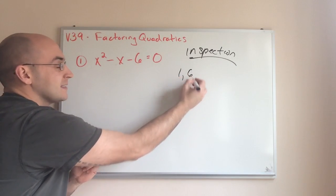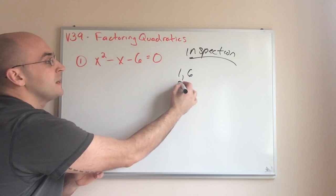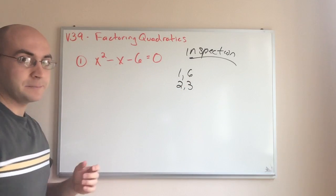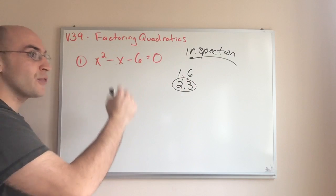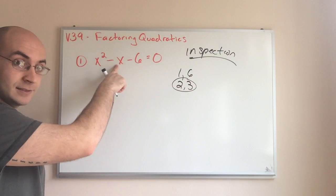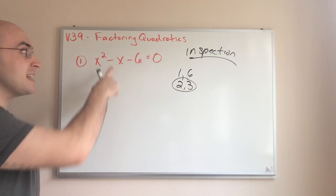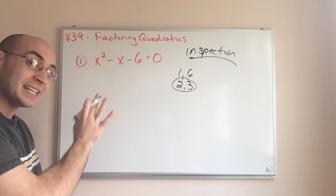Okay. So, I know one and six are factors. One times six is six. And the other two factors are two times three. Two times three is what I want because three minus two is one or two minus three is negative one. Okay. So, that's exactly what I'm looking at here. It's exactly what I need.